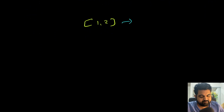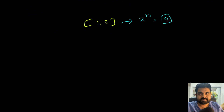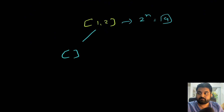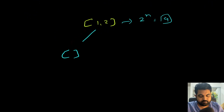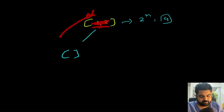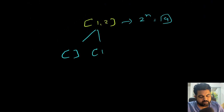For any given n value we can make 2 to the power n subsets. So in this case we should be able to make four different subsets. The first subset is an empty array. We can also generate a subset with just one, a subset with just two, and a subset with both one and two.